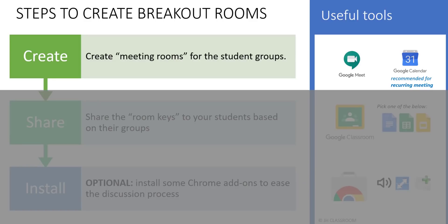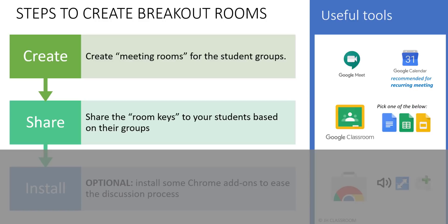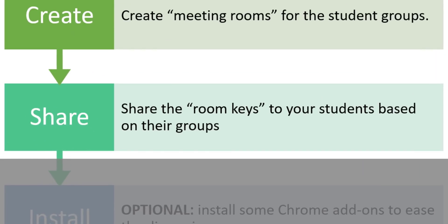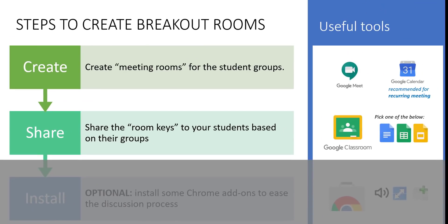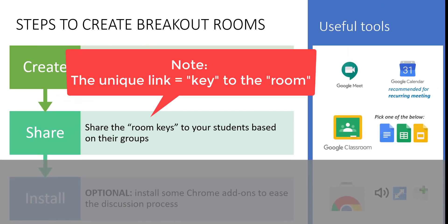Once you have created the breakout rooms — in our case three rooms for three groups — the second step would be to share the link with your students. In order to allow your students to enter their room based on their groups respectively, you will need to give them the key to the room. In this case, the key is referring to the unique Google Meet link that we created just now. There are many options to share — you may simply email your students, or even better, publish the link in Google Classroom.